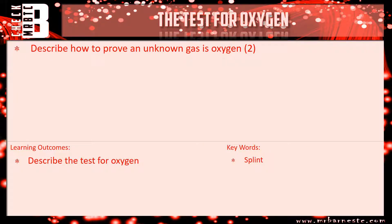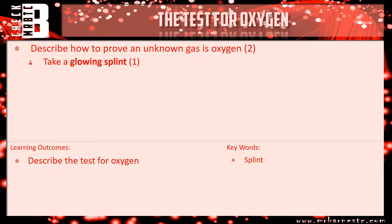Describe how to prove an unknown gas is oxygen. Your first mark: take a glowing splint — you have to say the word 'glowing' to get the mark. And then your second mark: it will relight in oxygen. So 'a glowing splint relights' would get you two marks out of two.